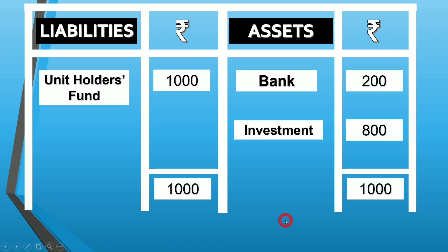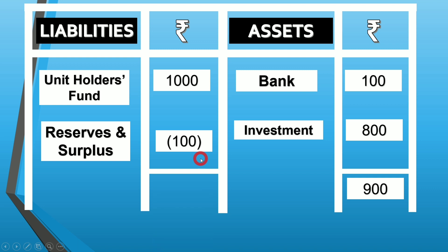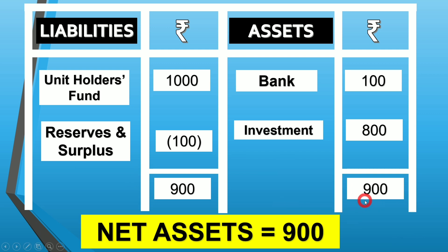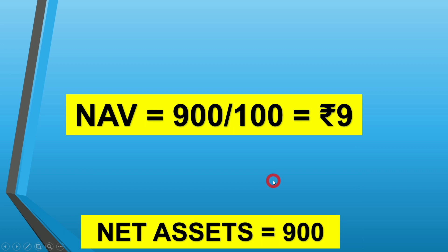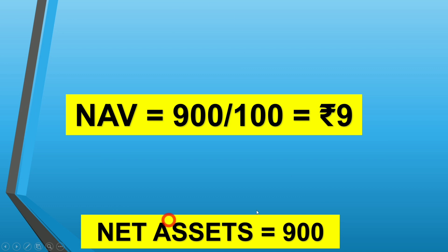Now assume we paid a salary of rupees 100 to the fund manager. Bank balance reduces from 200 to 100, and reserves and surplus shows negative 100 due to the salary paid. Total assets are now rupees 900, and the NAV becomes: 1,000 minus 100 salary, divided by 100 outstanding units, equals rupees 9 per unit. So the new NAV has come out to be rupees 9.